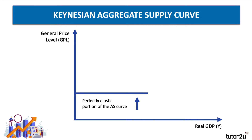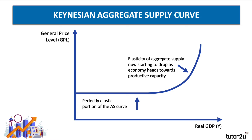When an economy has a high level of spare capacity, as shown here, then we would draw the Keynesian aggregate supply curve as perfectly elastic. Perhaps a country is emerging from a recession. Aggregate supply can increase without there being any rise in the general price level. And then in this next section, diminishing returns might be setting in, and the amount of spare capacity in the economy, measured perhaps by the rate of unemployment, is falling. Therefore, costs are starting to rise.